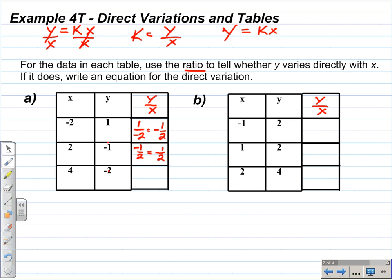Here we have negative 2 over 4, which this fraction simplifies to negative 1 half. Since all three of these ratios simplify to the same number, we can say that y varies directly with x, which means we can write an equation in the form y is equal to kx. We're going to use this negative 1 half as our constant of variation, so y is equal to negative 1 half x, or negative 1 half times x.